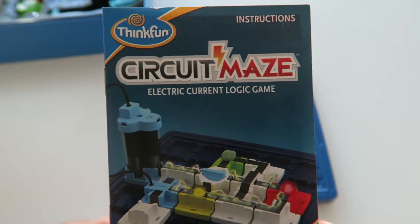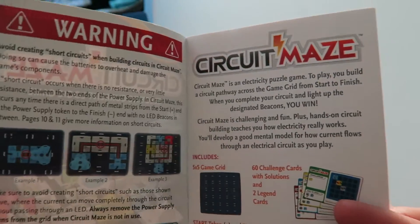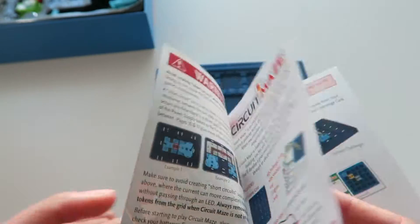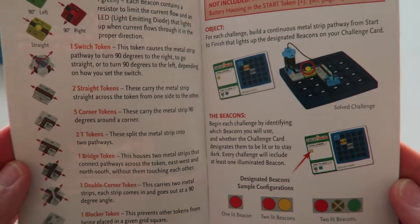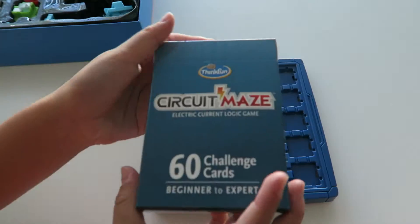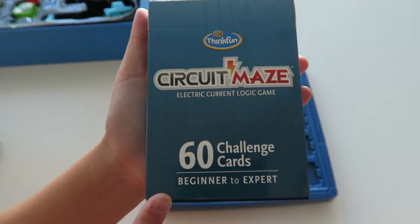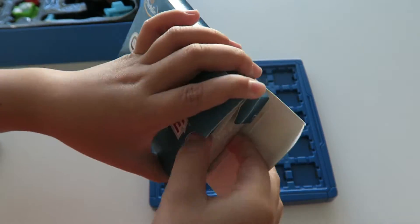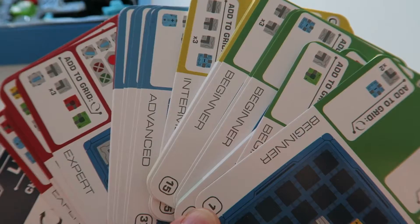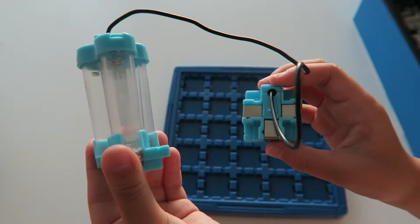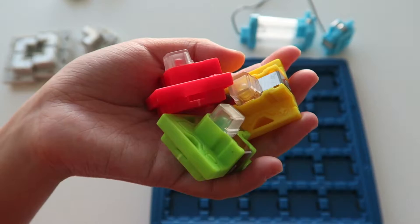And we have the 60 challenge cards, beginner to expert. Here are the 60 challenge cards. Here is the start token and the finish token. Here's the three beacon tokens: one green, one red, and one yellow.